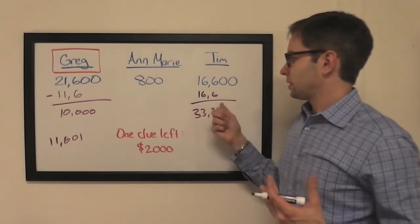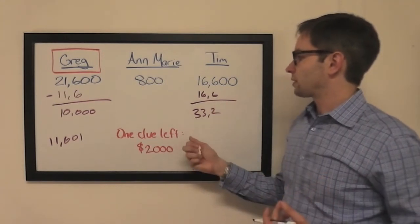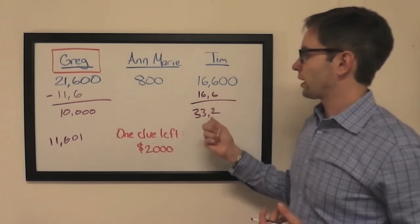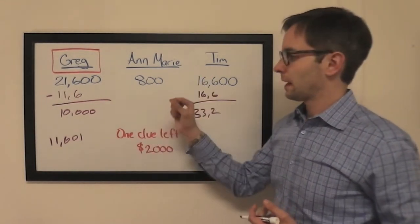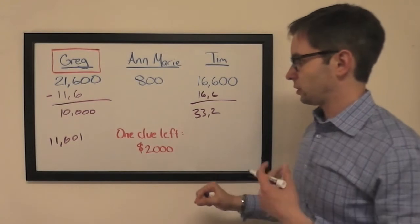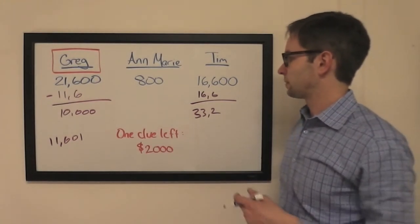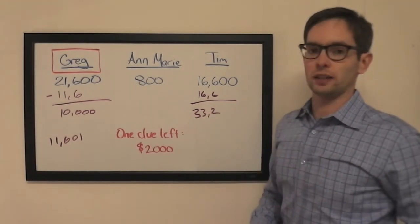If he really wants to lock things up and he's afraid that Tim might get this $2,000 clue, add $4,000 to his wager, $15,601. The downside to that is that if he misses, he'll be out of contention with just under $6,000. No chance of catching Tim, even with that $2,000 clue.